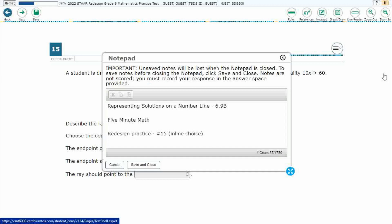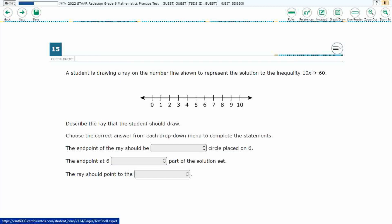Hello and welcome to 5-Minute Math. Today we are looking at the 6th grade concept of representing solutions on a number line. This is standard 6.9b in the great state of Texas and we are using item number 15, which is a new item type called inline choice off the Redesign Practice Online Star Test.